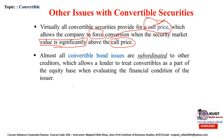Almost all convertible bond issues are subordinate to other creditors, meaning the claim of convertible bondholders comes after all other debt has been repaid or settled. However, convertible bonds are not subordinate to preferred stock or common stock, which allows lenders to treat convertible securities as part of the equity base when evaluating the financial condition of the issuer.